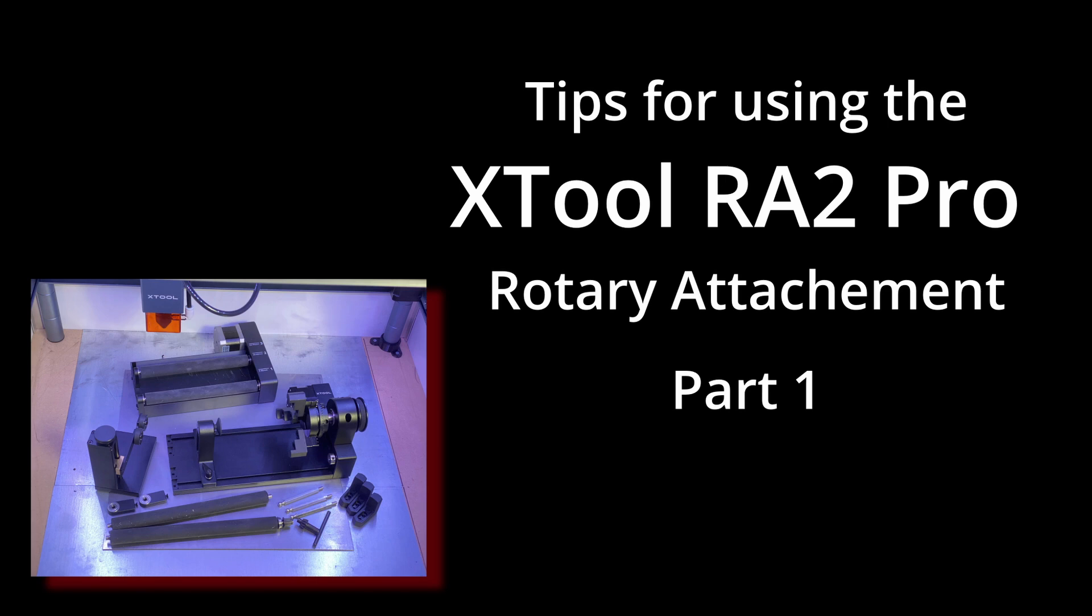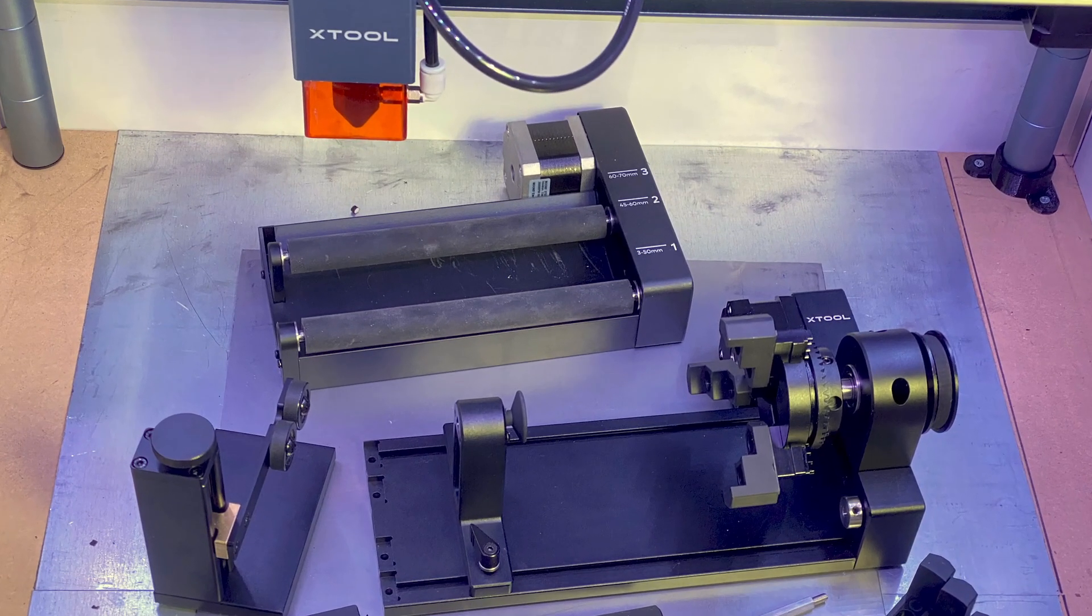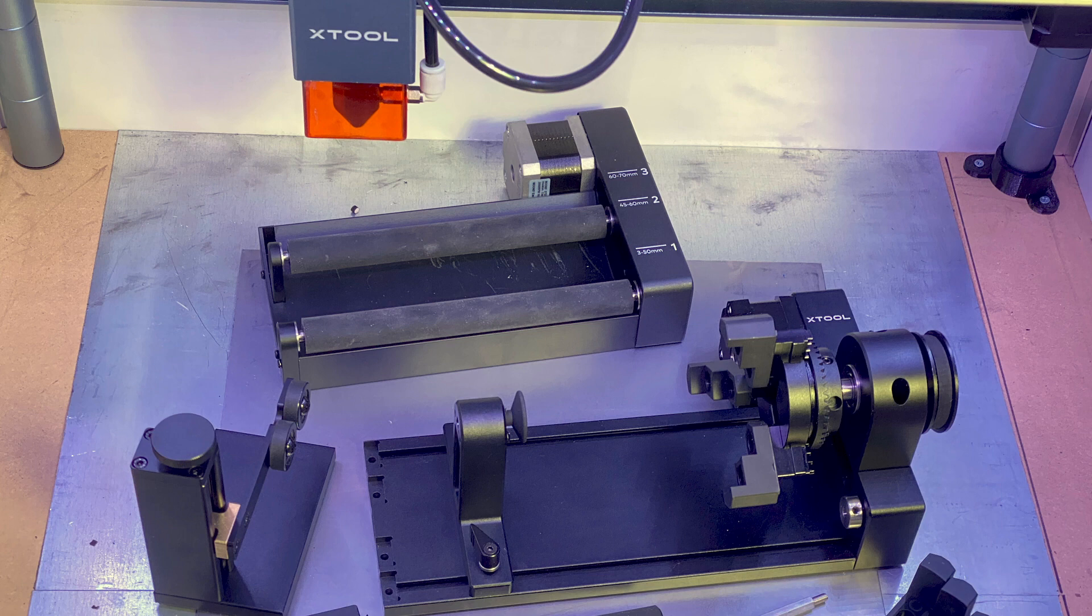The X-Tool RA2 rotary attachment is a very versatile addition to a diode laser. When I purchased my X-Tool D1 laser, it came bundled with a roller-style rotary attachment. You can see that in the top of this photo.